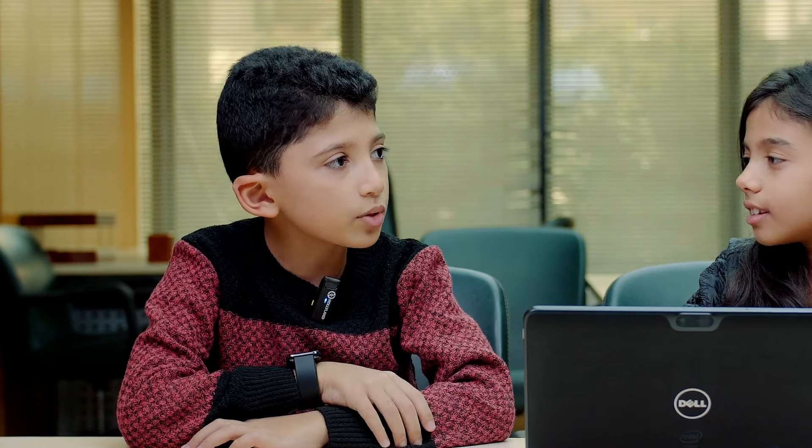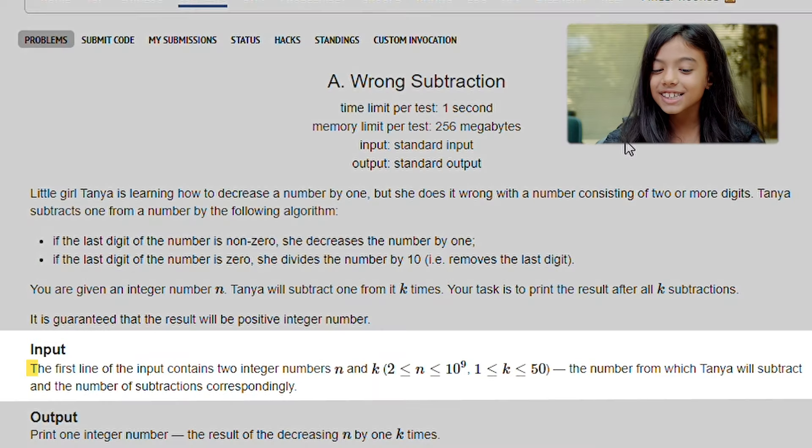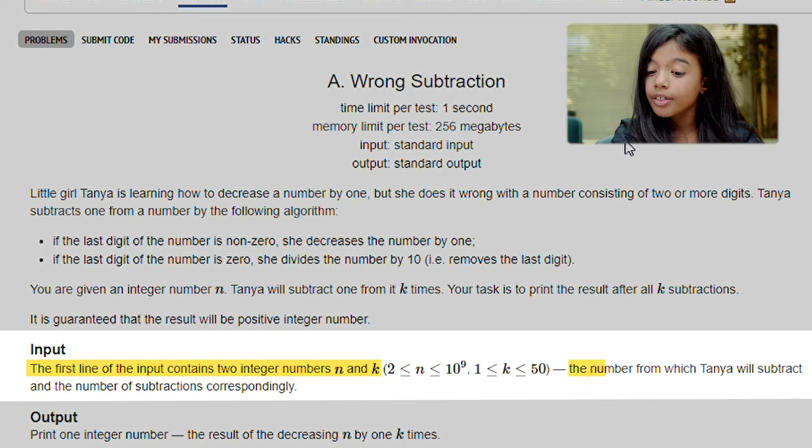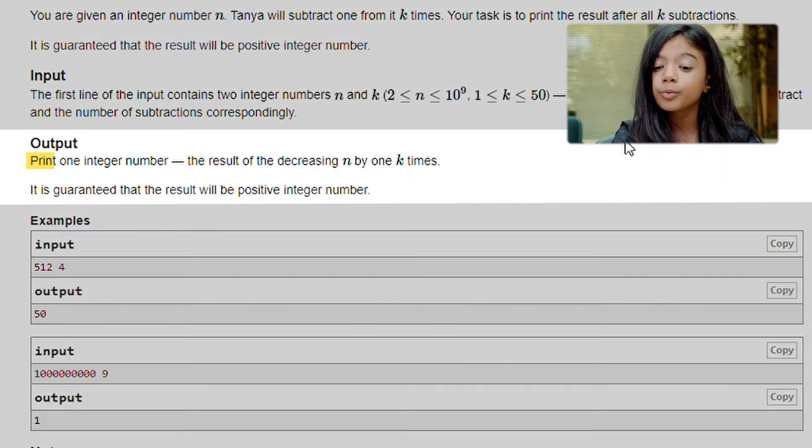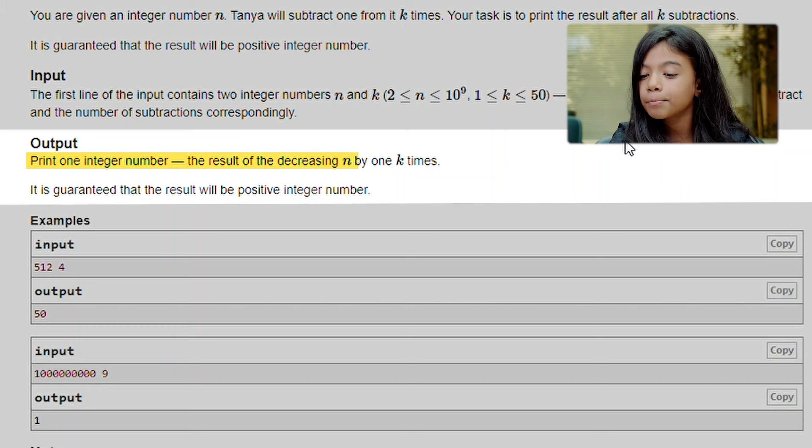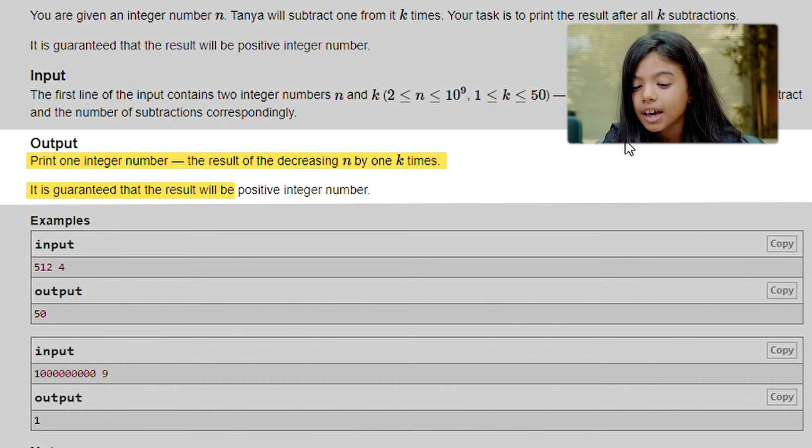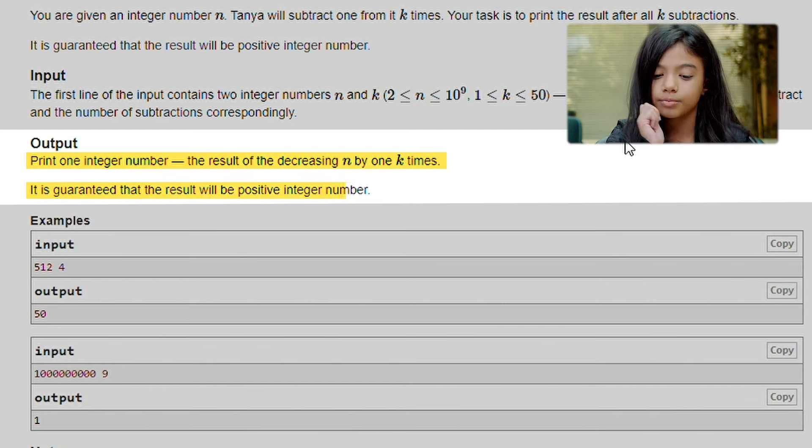And now, I'm going to read the input. The first line of the input contains two integer numbers, n and k. The number from which Tanya will subtract and the number of subtractions corresponding. Print one integer number, the result of decreasing n by one k times.